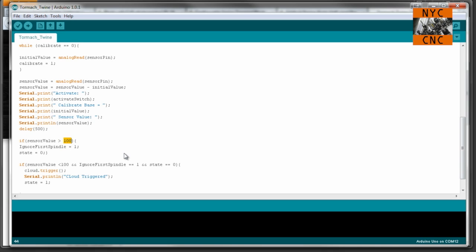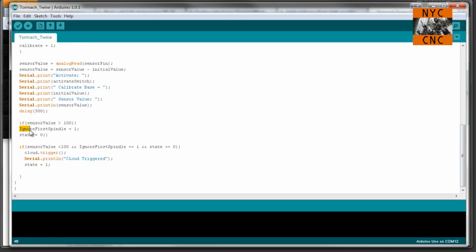That's 100 greater than whatever the base calibration is. Once it's been turned on, you can change the state of 'ignore first spindle,' because remember we don't want it to tell us it needs a tool change until the spindle has been running and it turns back off. In other words, you don't want a text message when you just turn the mill right on.